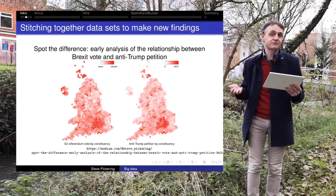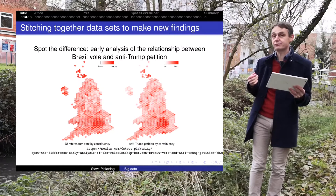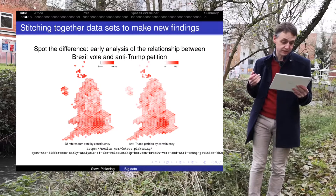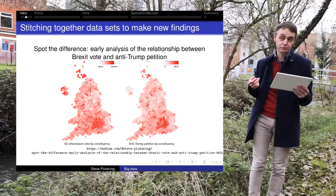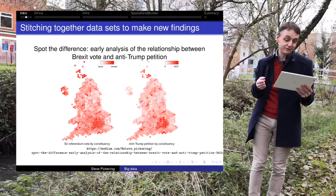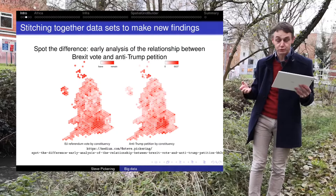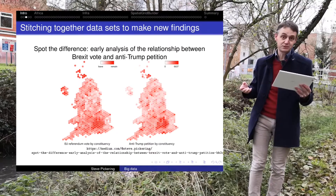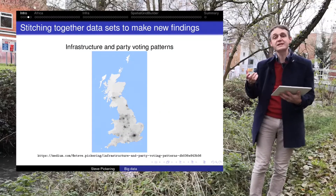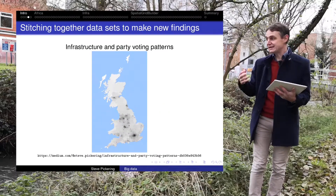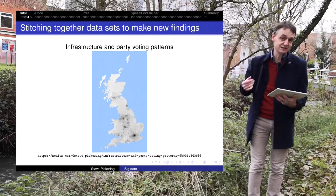Another thing we do with big data is stitch data sets together, and in doing that we can find new things. Here on one side I've got the EU referendum for the UK to leave the EU organized by constituency, and on the right-hand side the anti-Trump petition — launched so that Donald Trump wouldn't be allowed to come into the UK. We find a very strong relationship between the number of people in a constituency who wanted to remain in the EU and the number who signed that petition. We can also find a relationship between how dense the infrastructure is in a constituency and the way people vote there. This is stitching together data sets to make new findings.